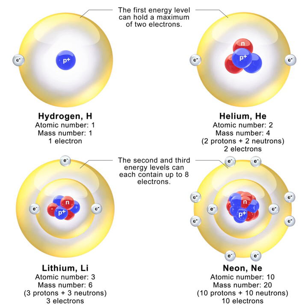Models for atomic nucleus consisting of protons and neutrons were quickly developed by Werner Heisenberg and others. The proton-neutron model explained the puzzle of nuclear spins. The origins of beta radiation were explained by Enrico Fermi in 1934 by the process of beta decay, in which the neutron decays to a proton by creating an electron and an as-yet-undiscovered neutrino. In 1935, Chadwick and his doctoral student Maurice Goldhaber reported the first accurate measurement of the mass of the neutron. By 1934, Fermi had bombarded heavier elements with neutrons to induce radioactivity in elements of high atomic number. In 1938, Fermi received the Nobel Prize in Physics for his demonstrations of the existence of new radioactive elements produced by neutron irradiation and for his related discovery of nuclear reactions brought about by slow neutrons.